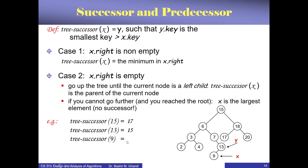What is the successor of 9? Node 9 is a leaf with no right subtree. We go up: is 9 a left child of 13? Yes — therefore 13 is the successor of 9. So to summarize: if the right subtree is not empty, the successor is the minimum of the right subtree. Otherwise, go up the tree until the current node is a left child of its parent — that parent is the successor.